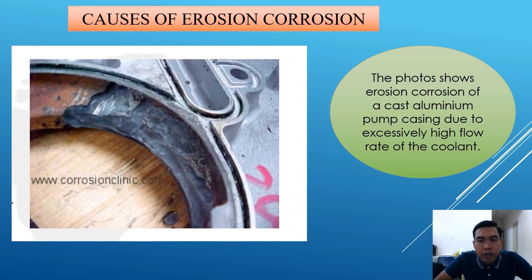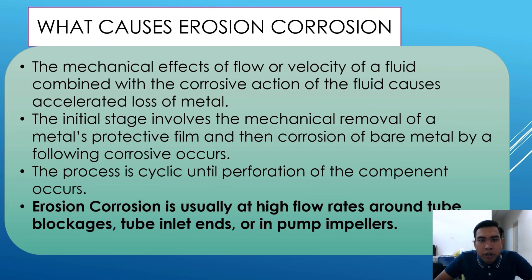Cause of erosion corrosion: the photo shows erosion corrosion of a cast aluminum pump casing due to an excessively high flow rate of coolant. The mechanical impact of flow or velocity of a fluid combined with the corrosive action of the fluid causes erosion corrosion. The initial stage involves the mechanical removal of the metal's protective film, then corrosion of the bare metal by the following corrosive flow. The process is cyclic until perforation of the component occurs. Erosion corrosion is usually found at high flow rates around tube blockages, tube inlet ends, or in pumps.